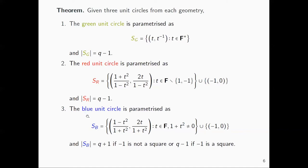For the blue circle, we again have the usual rational parameterization. We have to be aware that 1 + t² can be zero because we are working in a finite field. So depending on whether −1 is a square or not, the number of elements on the blue circle will be either q+1 or q−1.